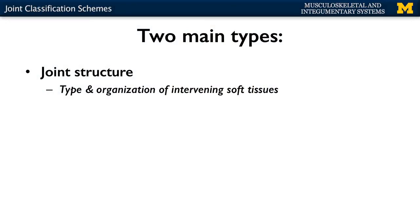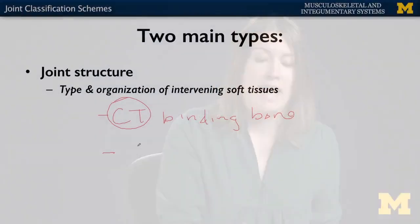The first we're going to discuss is joint structure — the type and organization of the soft tissue, specifically the connective tissue, that's going to keep the bones together. There are going to be two types: either the connective tissue (CT) is actually binding the bones to one another, or the other more common type where the connective tissue is on the edges in what's referred to as a capsule.